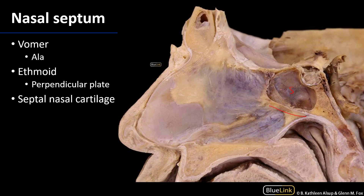This is the sphenoidal sinus. Here is the hard palate coming back, and arising out of the floor of the maxilla and the palatine bones is the vomer, and we can see how this is in fact shaped like a plowshare.